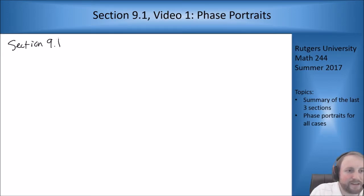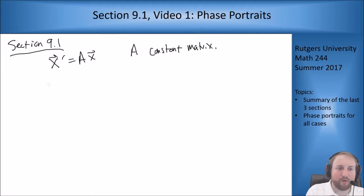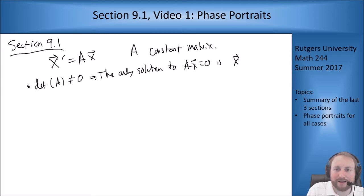The idea of this section is to bring everything together and put it all in the appropriate context. The concept is we're solving ODEs of the following form: x prime equals A times x, where A is a constant matrix. We'll assume that the determinant of A itself is non-zero, which means the only solution to Ax equals 0 is x equals 0.